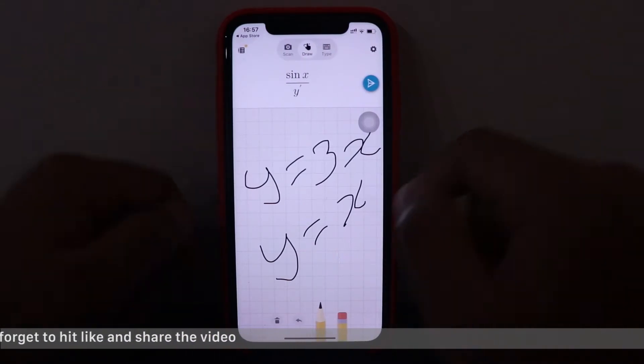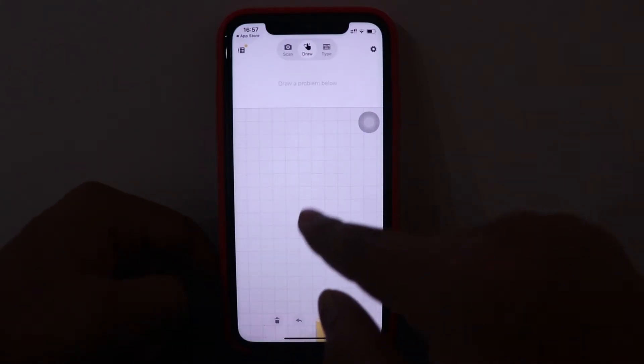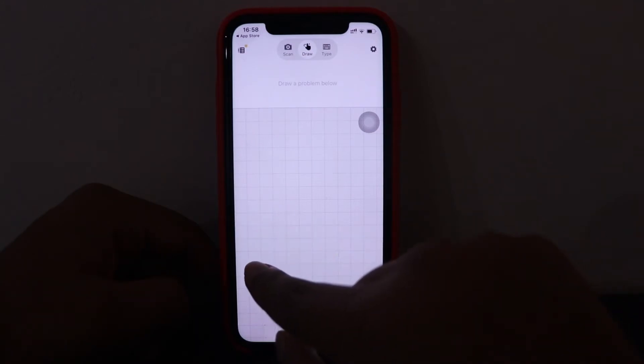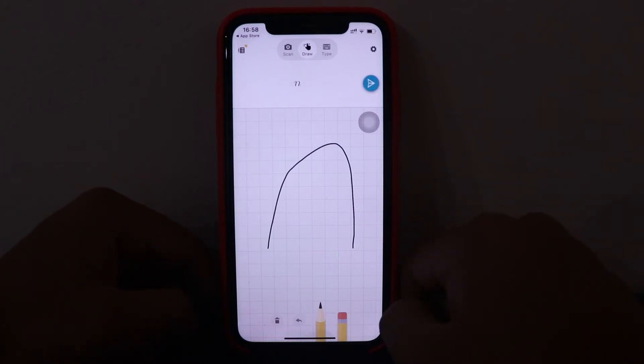So yes, so it is giving something. Let's just check. I don't know what did it give. So basically this is a graph. So we need to draw a graph over here I believe. So let's just draw a hyperbola, parabola, whatever it is called.